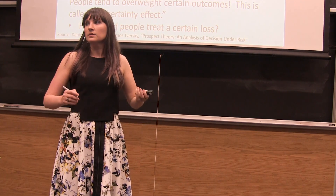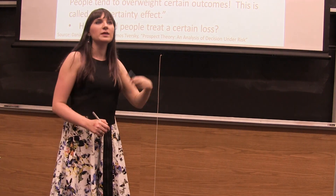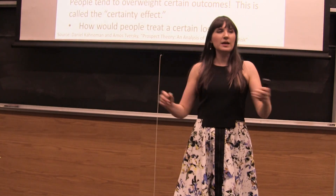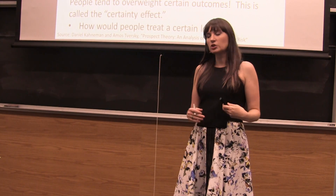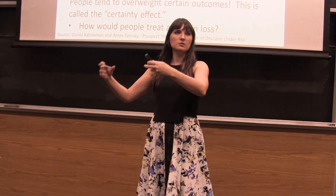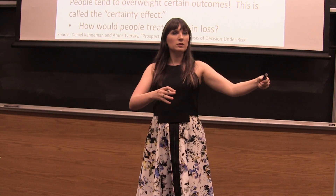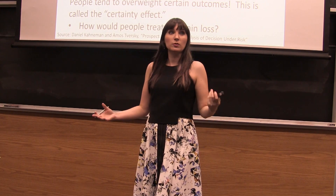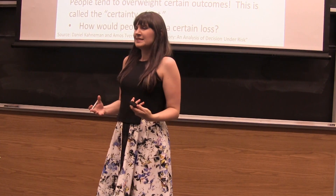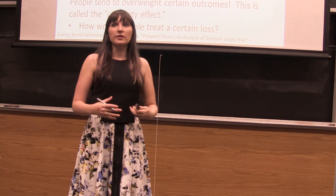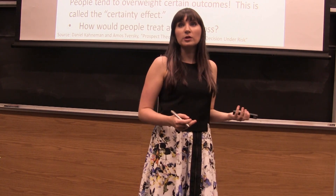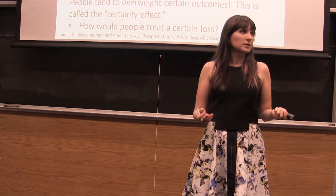We would like to have a way to continue this analogy of the expected utility framework, because we don't want to have something totally different. We'd like to change as little as possible so that you could just take this new model and stick it in everywhere that we'd been using the expected utility framework before. So, how can we come up with a modification of the expected utility framework that takes this into account?